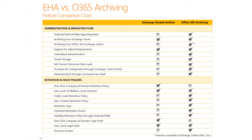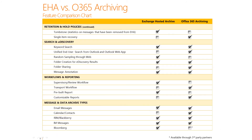The same is true for one-click company and domain legal hold. The functionality exists in Office 365 archiving, but it is not a one-click behavior for Office 365. Exchange Hosted Archive and Office 365 both have retention and hold policies. EHA gives you simple statistics on how many messages have been removed from the EHA service. Office 365 allows an organization to actually restore those messages if requested, based on their expiration period set by the business.